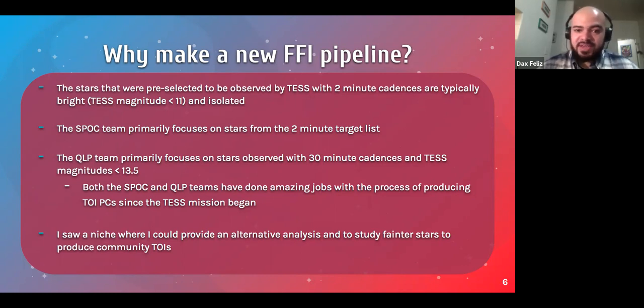And the Science Processing and Operating Center team, or SPOC, primarily focuses on these two-minute target lists. But because M dwarfs are faint, there's a lot of them that are not observed with two-minute cadences. So that leaves us with 30-minute cadences only. The QLP team, which stands for Quick Look Pipeline, over at MIT, they primarily focus on all kinds of stars that observe with 30-minute cadences, but have TESS magnitudes less than 13 and a half. Which means there are a lot of faint stars that they're not looking at.